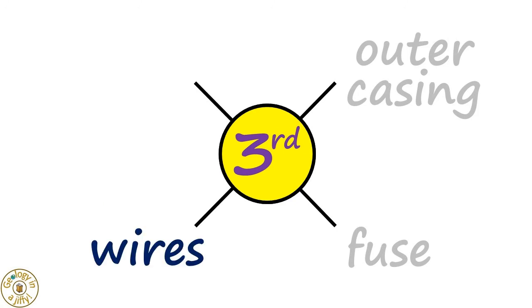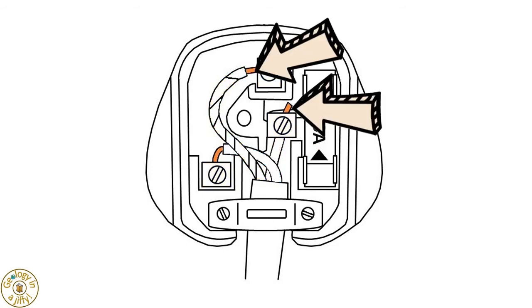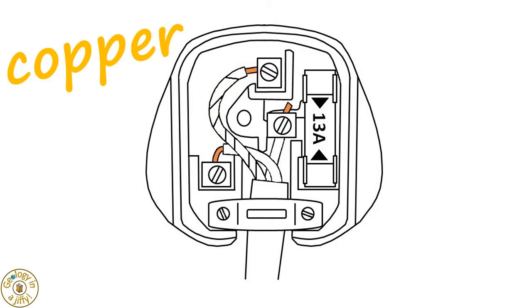The third part in a plug are the wires. Inside our plug we see there are three plastic covered wires. Looking at the ends of the wires, we see the inner copper metal wires. Copper is used because it is a good electrical conductor.